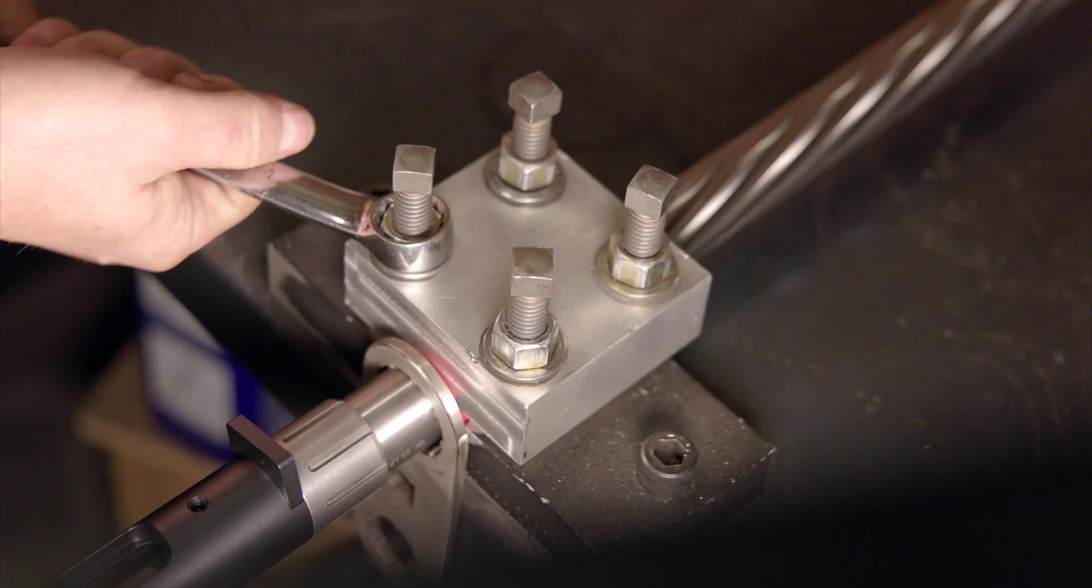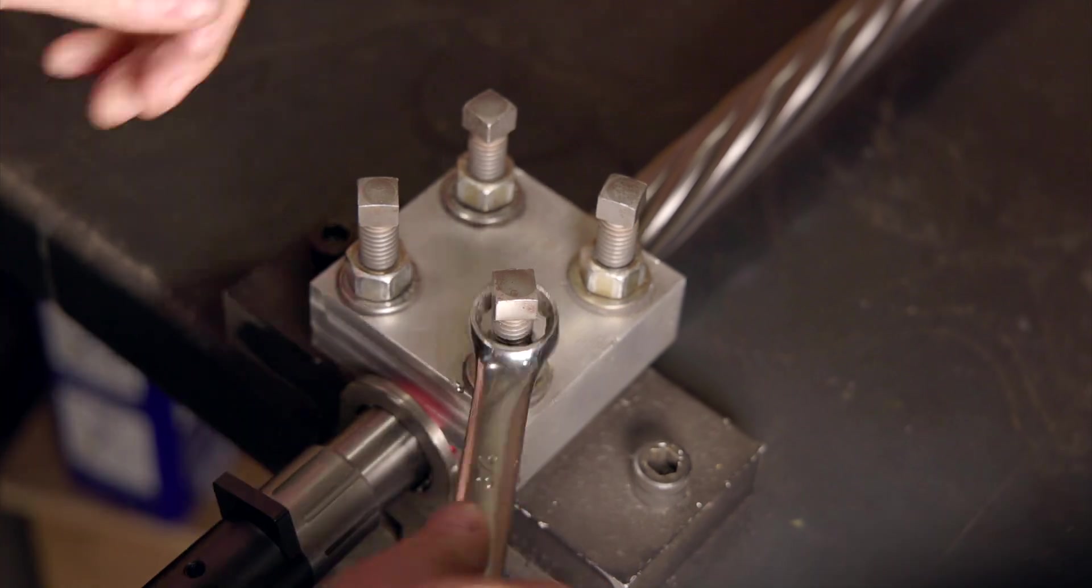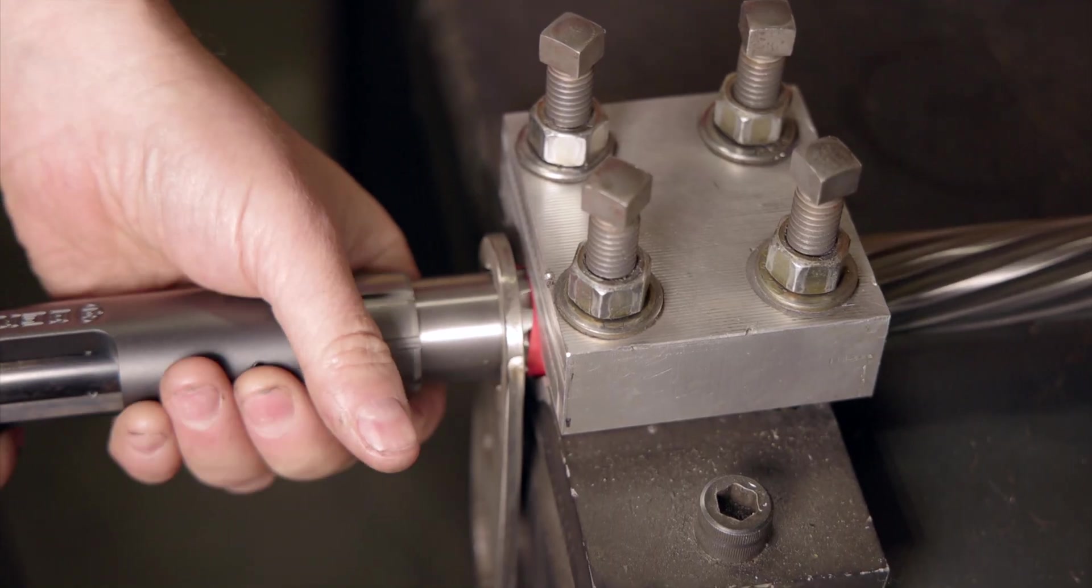Once you've got that, hand tighten up the barrel nut, loosen up the vise a bit, and flip the action over so that it's upright and tighten her down again.